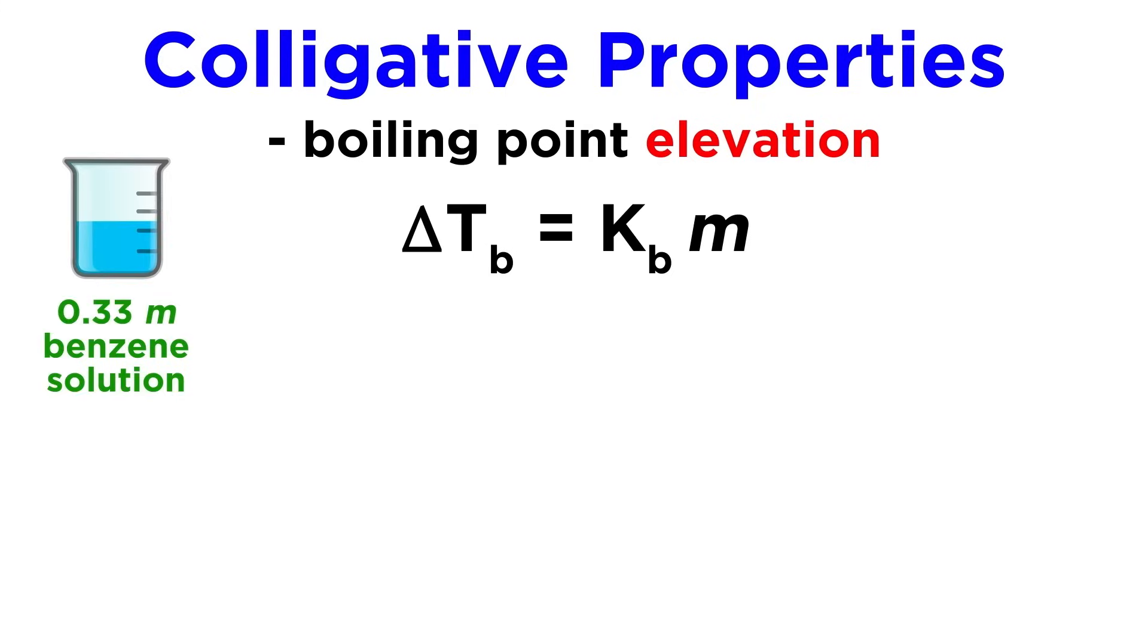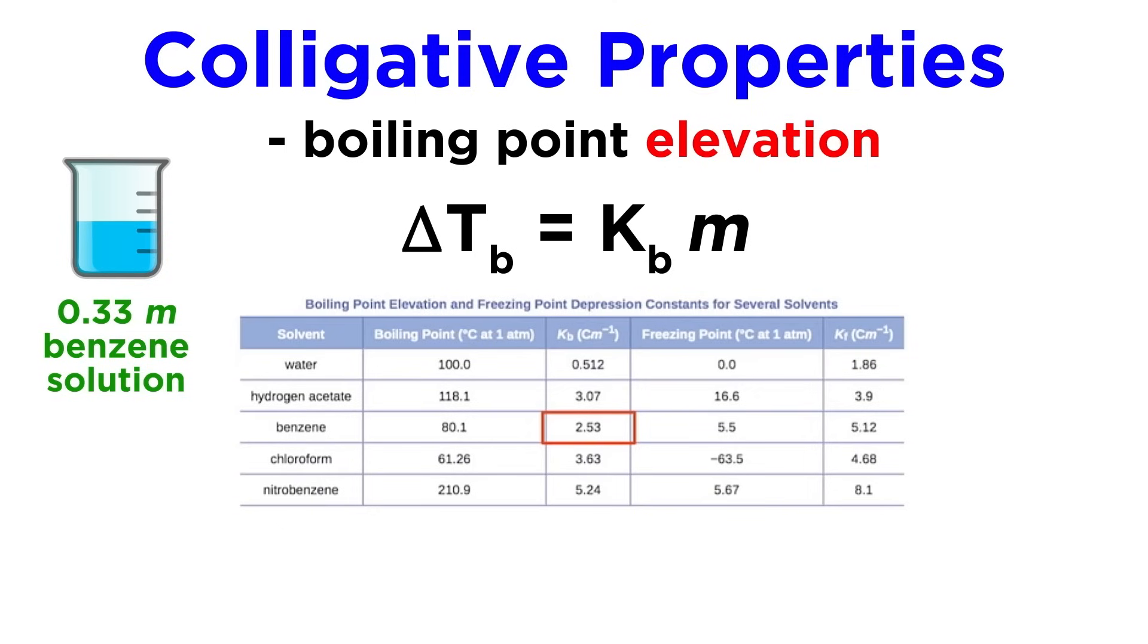For example, if we have a 0.33 molal solution of some solute in benzene, what will be its boiling point? Let's look at our table and get the Kb value for benzene, and plug that into our equation along with the molality. We should get 0.83 degrees as the boiling point elevation.